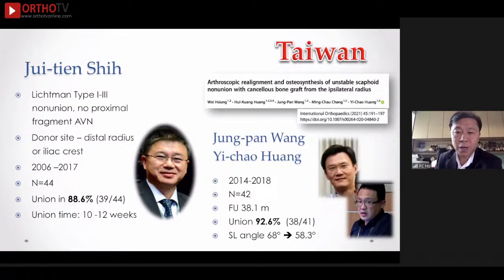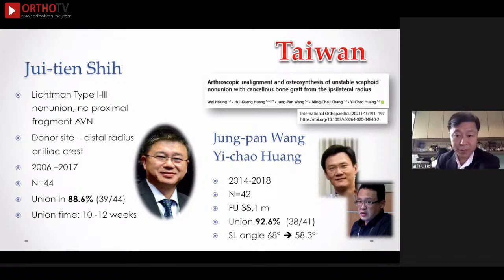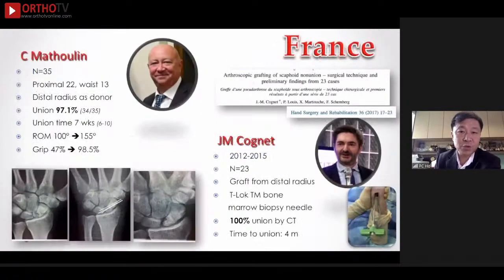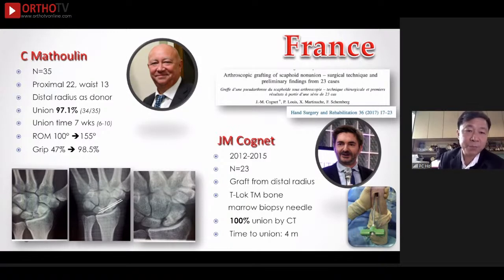Our good friends Zhu Pan Wang and Yi Chao — Dr. Wang will also present some of his experience later on. In their latest series, very good correction even in patients with unstable non-union, with no problem correcting the alignment back to more normal, just from the distal radius. In France, Professor Matalin performed very good results using the distal radius as the bone donor site, achieving very good union — only one out of 35 cases failed to unite — with excellent functional outcome and grip strength.